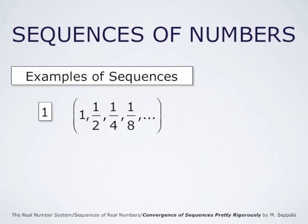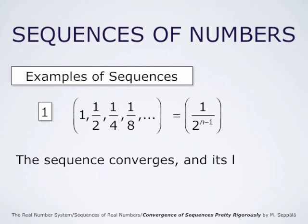Our first example of sequences was 1, 1/2, 1/4, 1/8, and so forth. The first task is to understand what the function is that defines this particular sequence. In this case, the function is 1 divided by 2 to the power n minus 1. Because if n is 1, n minus 1 is 0, and 1 divided by 2 to the power 0 is just 1. If n is 2, we get the term 1/2. As n grows, 2 to the power n minus 1 grows and becomes arbitrarily large, and therefore 1 divided by that approaches 0. So we conclude that this sequence converges and its limit is 0.